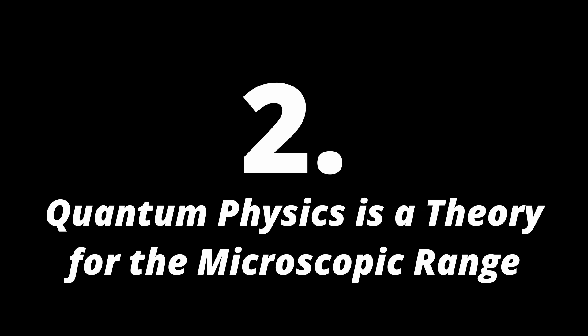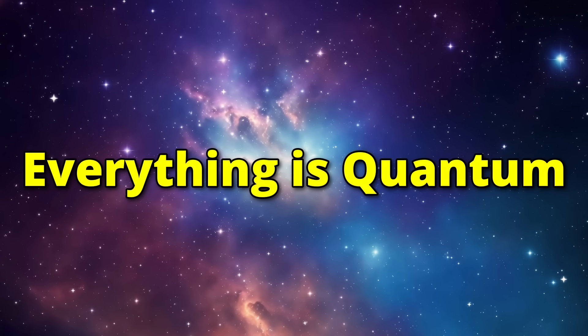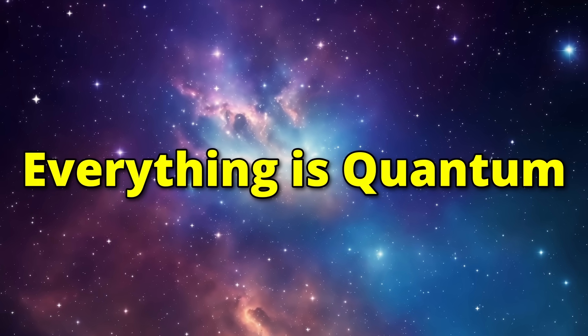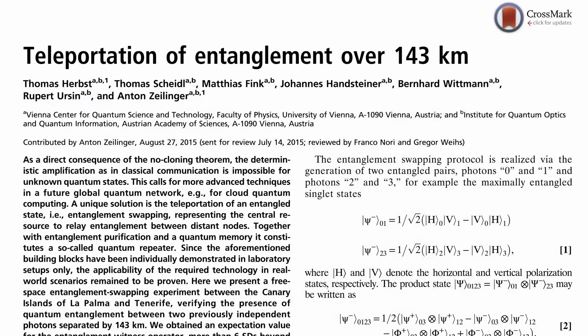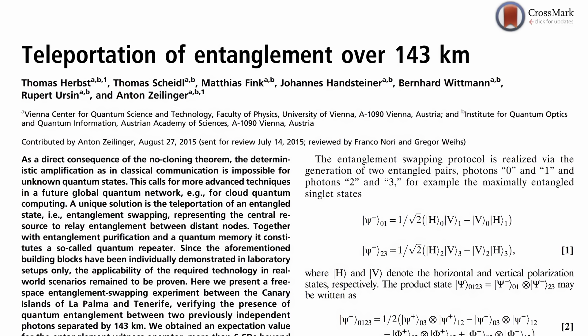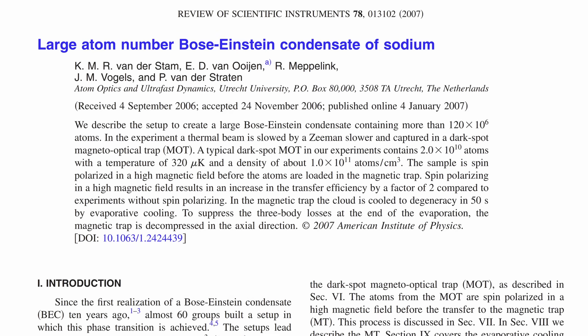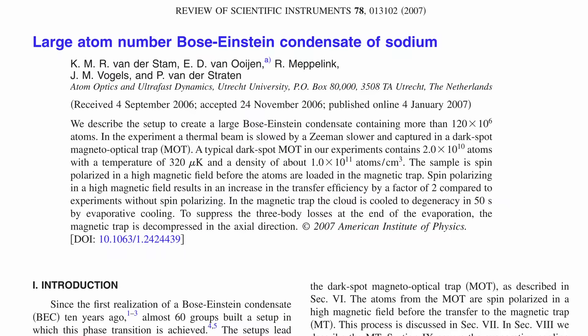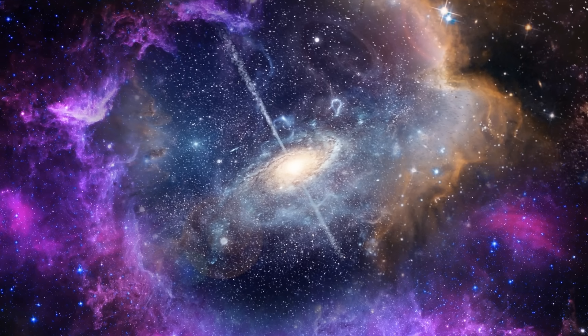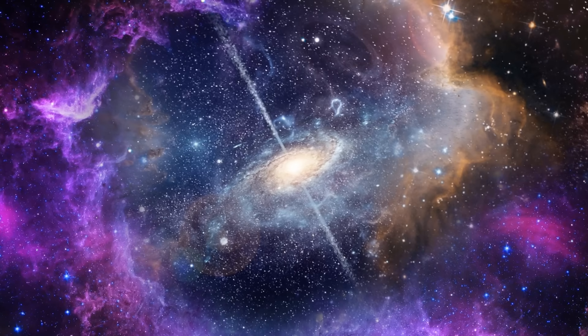Number 2: Quantum physics is a theory for the microscopic range. No — quantum physics is a theory that applies to everything. It's just that in most cases you can't observe the effects. However, quantum entanglement has been measured between photons as far as 100 kilometers apart, or Bose-Einstein condensates in which particles take on one common quantum state that can contain millions of atoms. There are even theories in which dark matter has quantum properties that literally stretch throughout entire galaxies. Loosely speaking, the bigger and warmer an object is, the more difficult it is to observe its quantum properties. But strictly speaking, the quantum properties never go away.